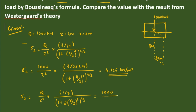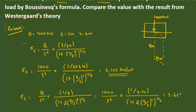Substituting: Q value is 1000 divided by Z value is 3 squared, into 1 divided by 3.14, divided by 1 plus 2 into (4 divided by 3) whole squared, whole power 3. Solving this, we get the value of 3.637 kN per meter square. So using Boussinesq's theory the value is 4.125, and using Westergaard analysis the value is 3.637. We will see the next problem in the next video.